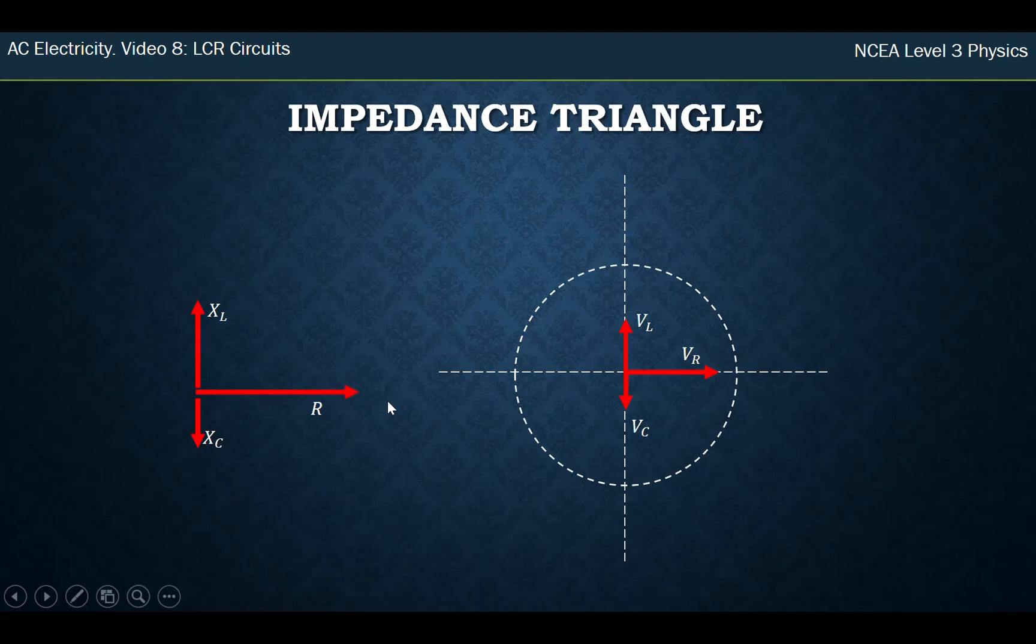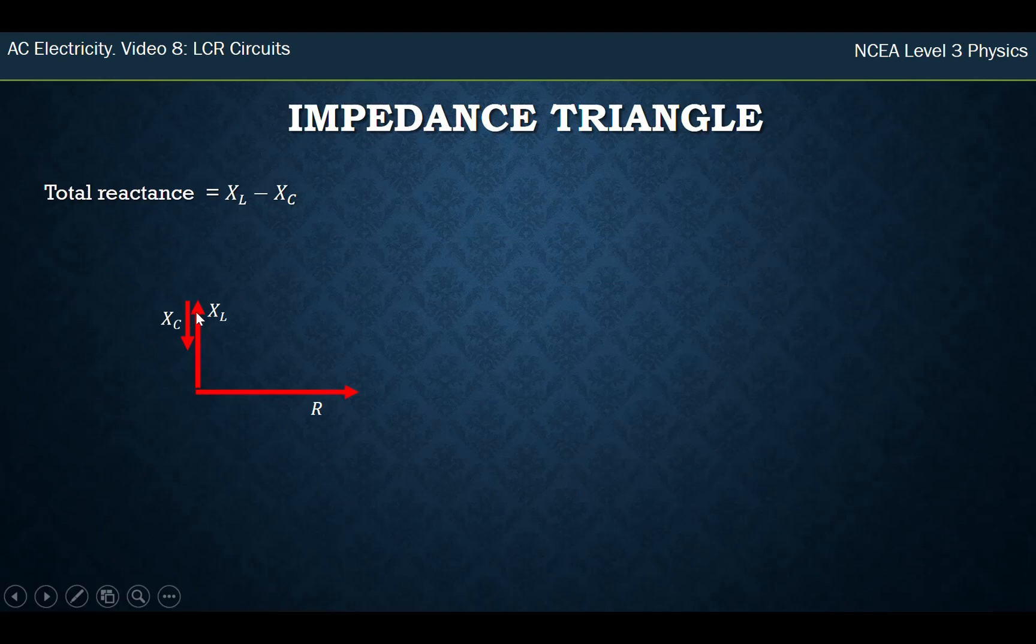So an impedance triangle for that situation has the same relationship as the voltages do. The resistance of the resistor's out to the right, the reactance of the inductor is pointing upwards, and it's directly out of phase with the reactance of the capacitor, which points downwards. The total reactance, so remember this R is a resistance, and these two reactances, because one's going up and one's going down, to find the total out of these two, you can just subtract one from the other, just like a very simple force diagram. And when you subtract one from the other, so you do it in terms of vectors like this, you put them beside each other, and the gap you've got left is the overall total reactance.